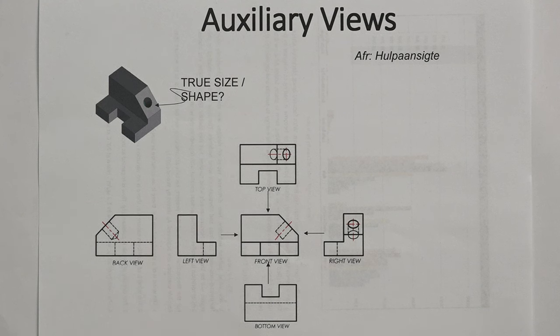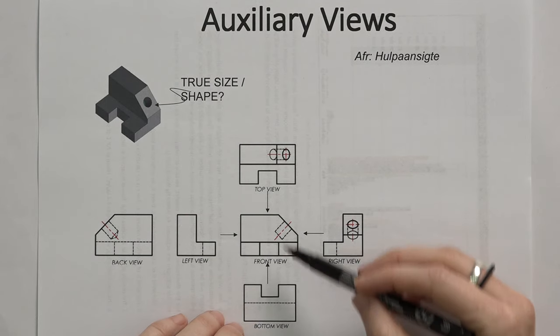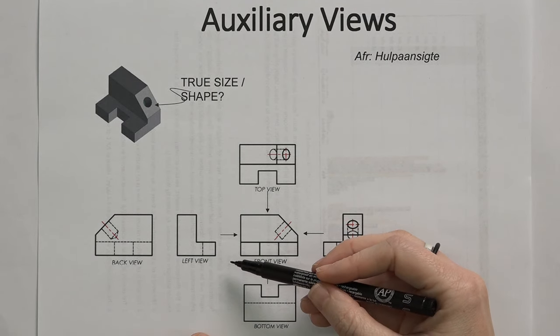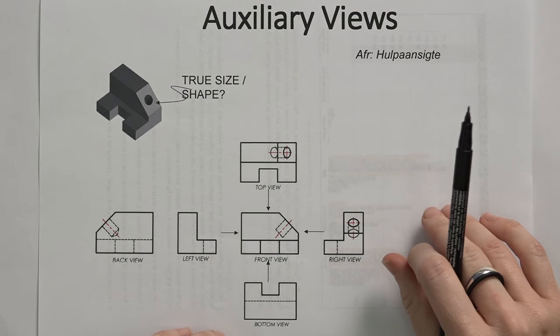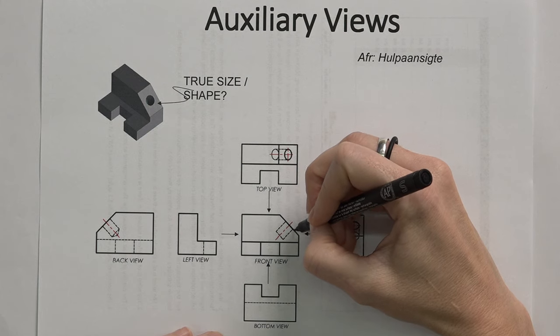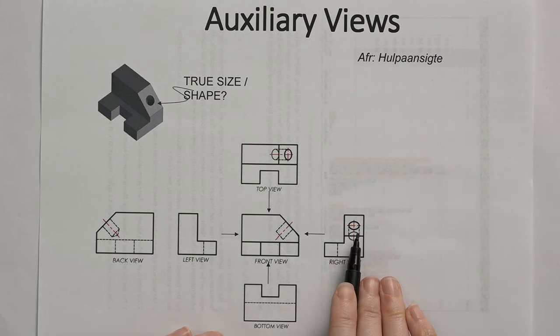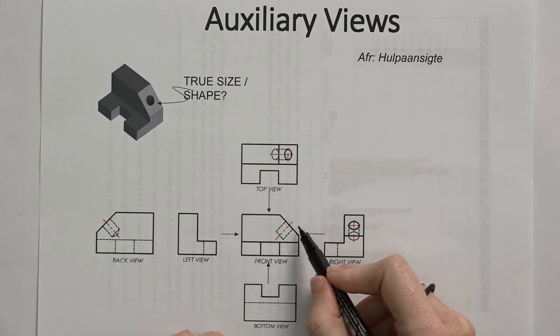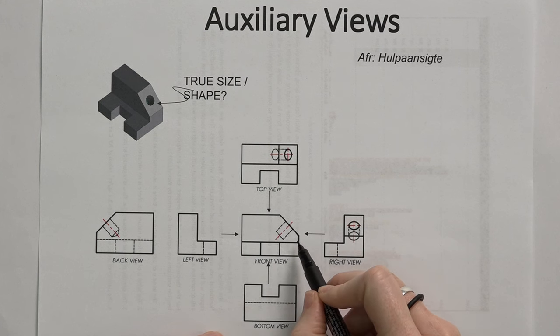Up to now we've only considered views that are either right, top, bottom, left, or behind a component. But sometimes when we have a component, there's a specific face that runs at an angle, and when we are drawing a right view or a top view, we're actually distorting the information that we see on that angle.